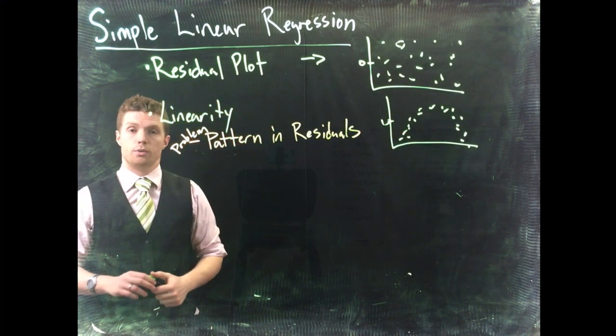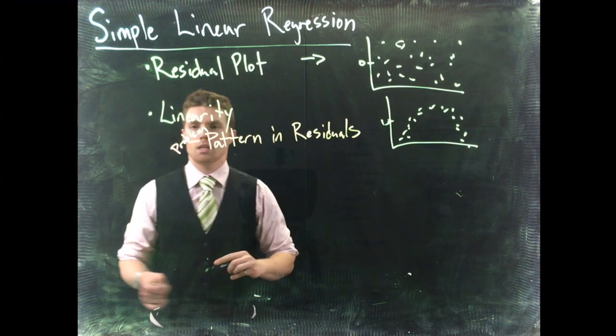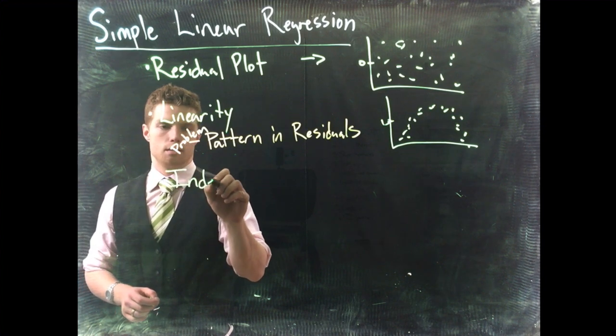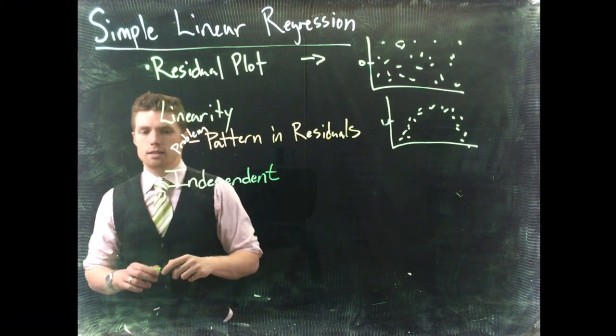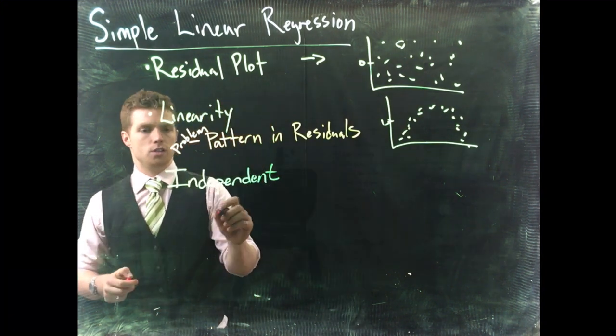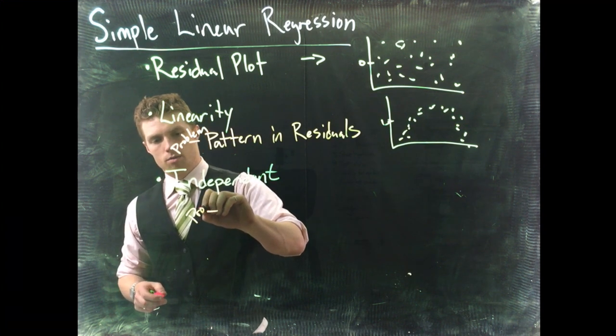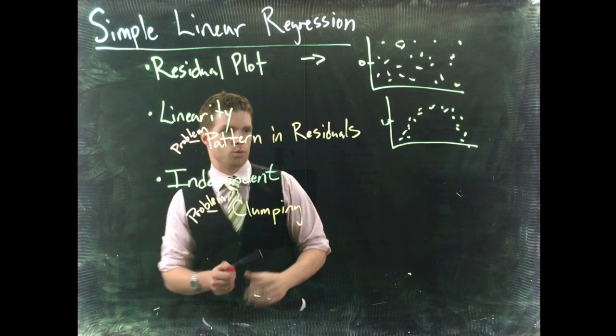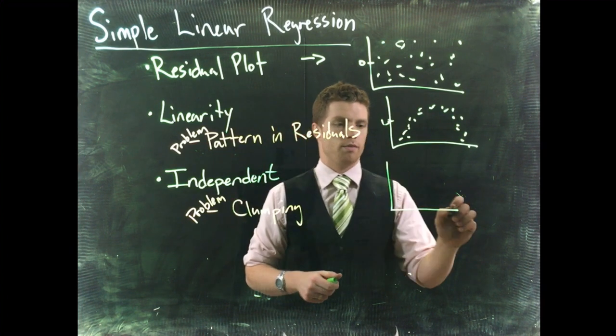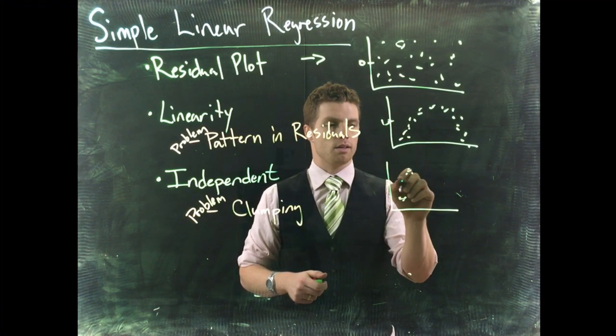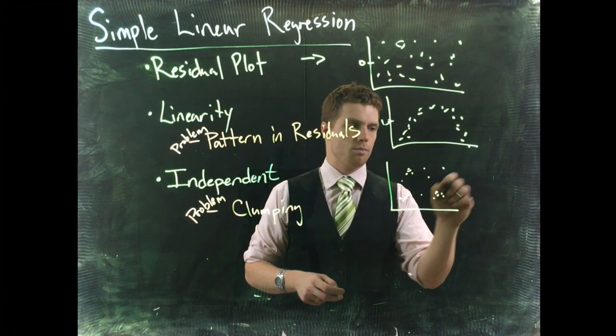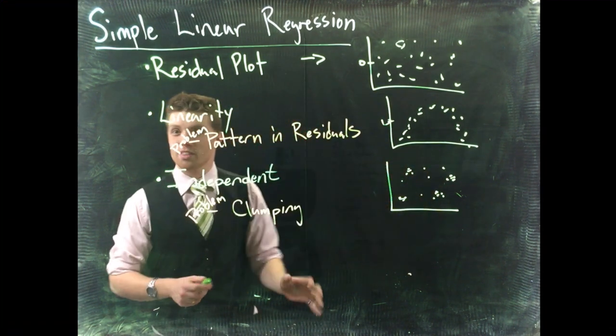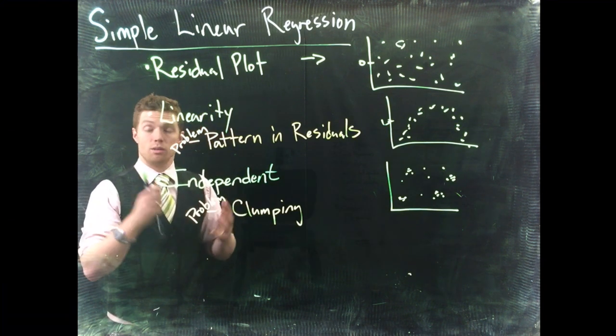Number two, we'll talk about independence. If our data is not independent, our residuals will have a problem here and we'll see clumping. Here's what it's going to look like. The residual plot will be right here and we'll have like a clump here, a clump there, maybe a few data points, clump there and a clump there. If we see this really distinctive clumping, we've got a problem with independence in our data and we once again shouldn't do our regression analysis.